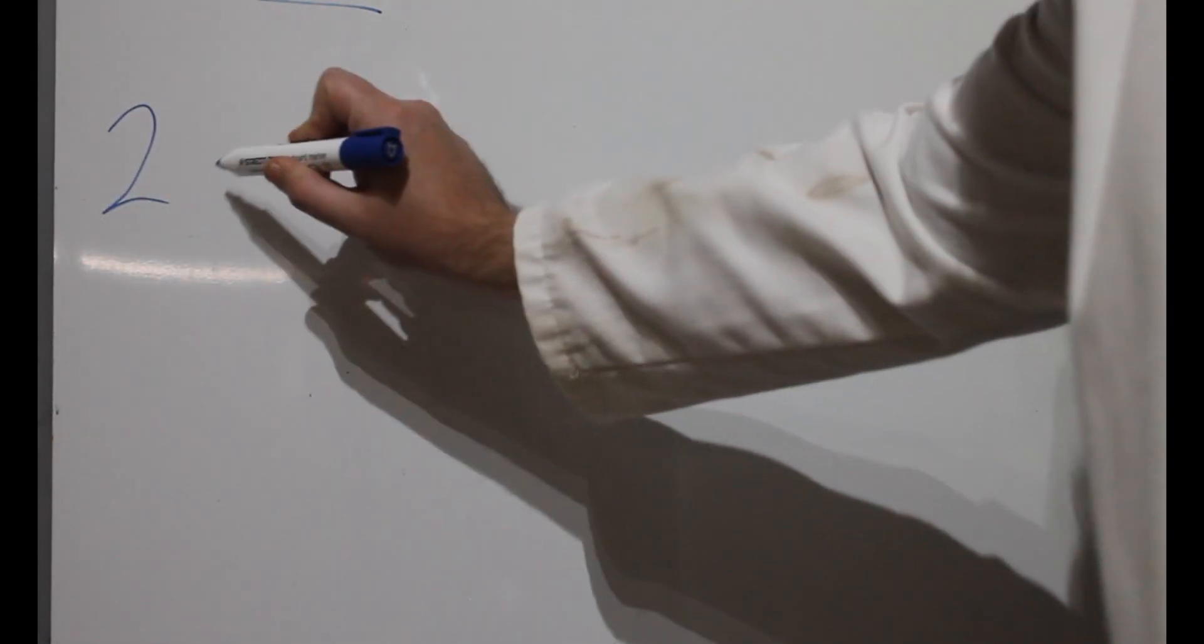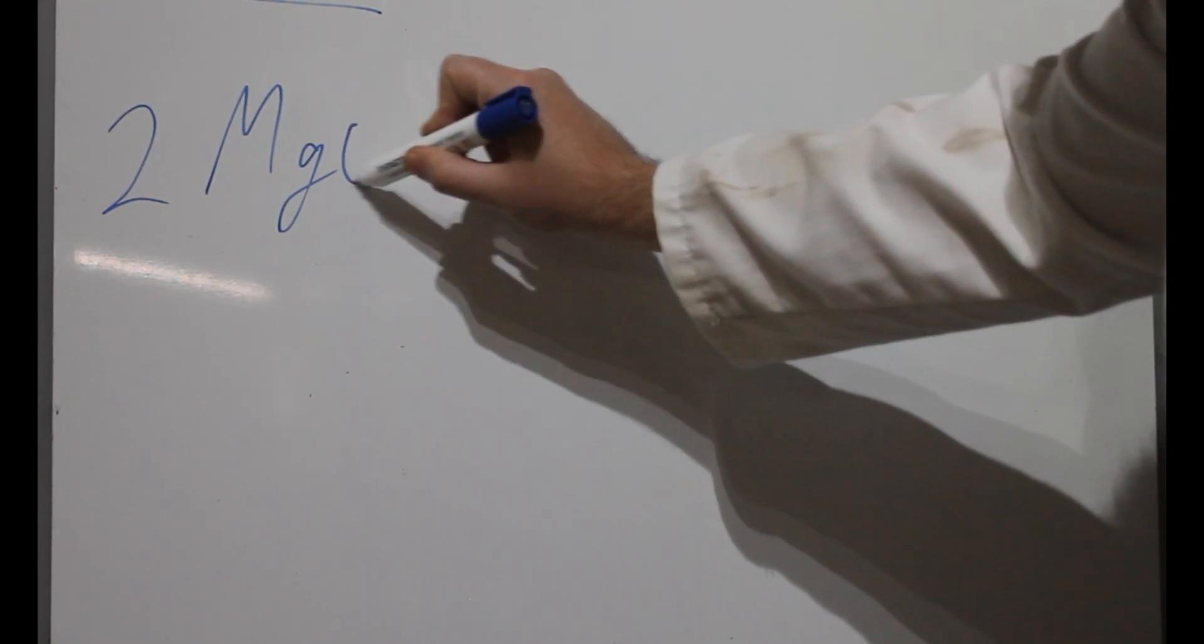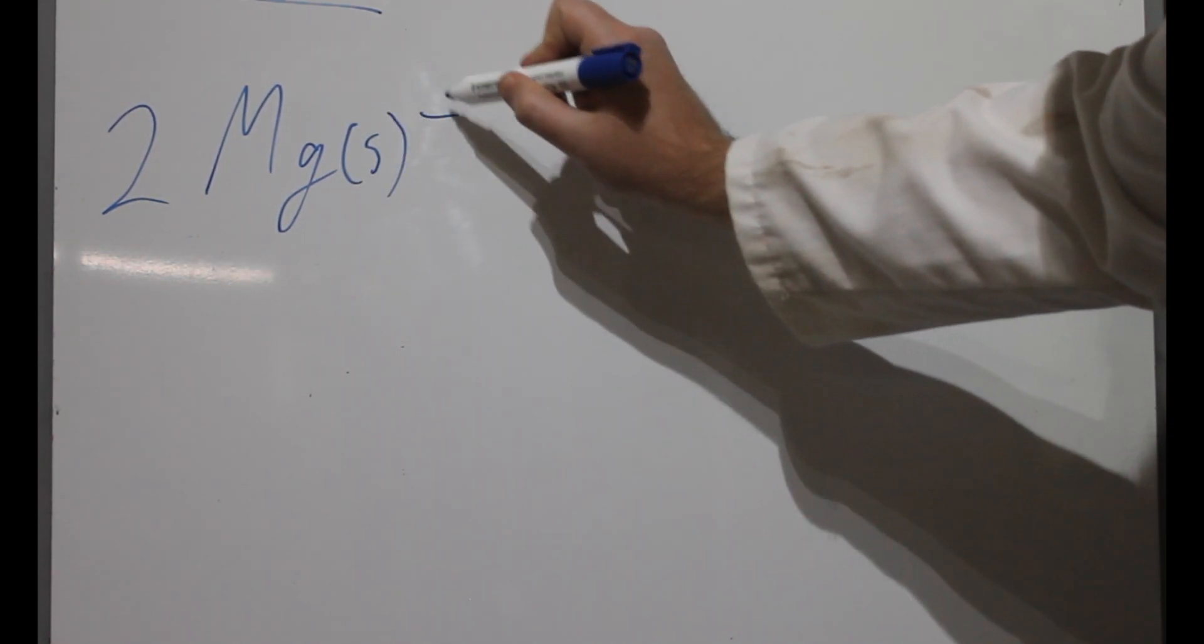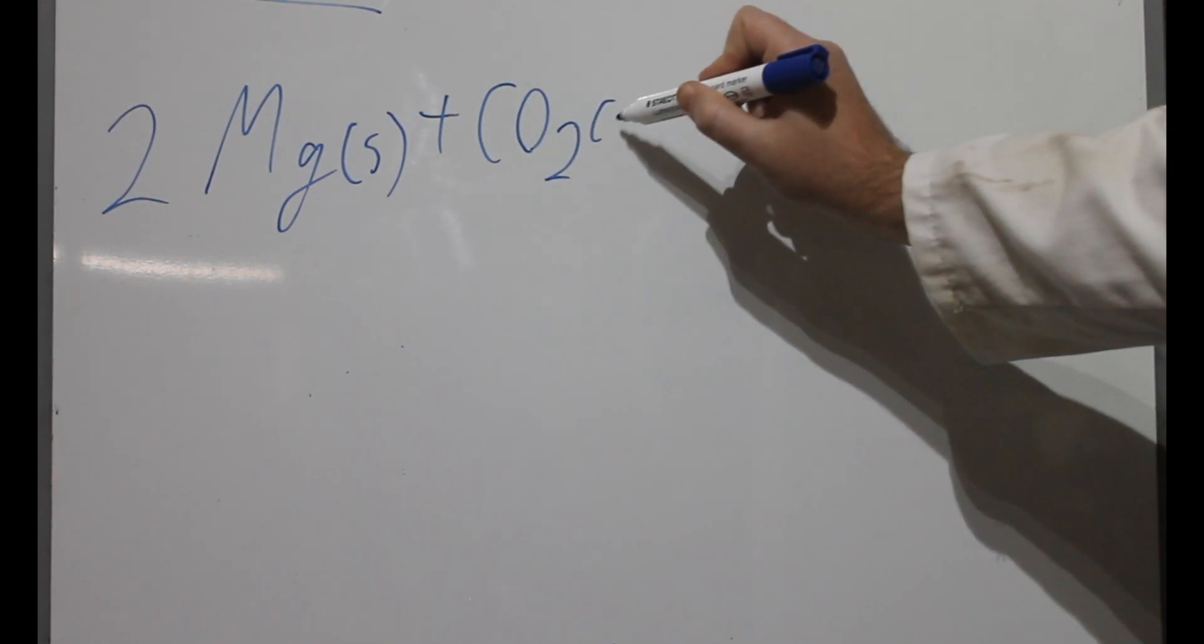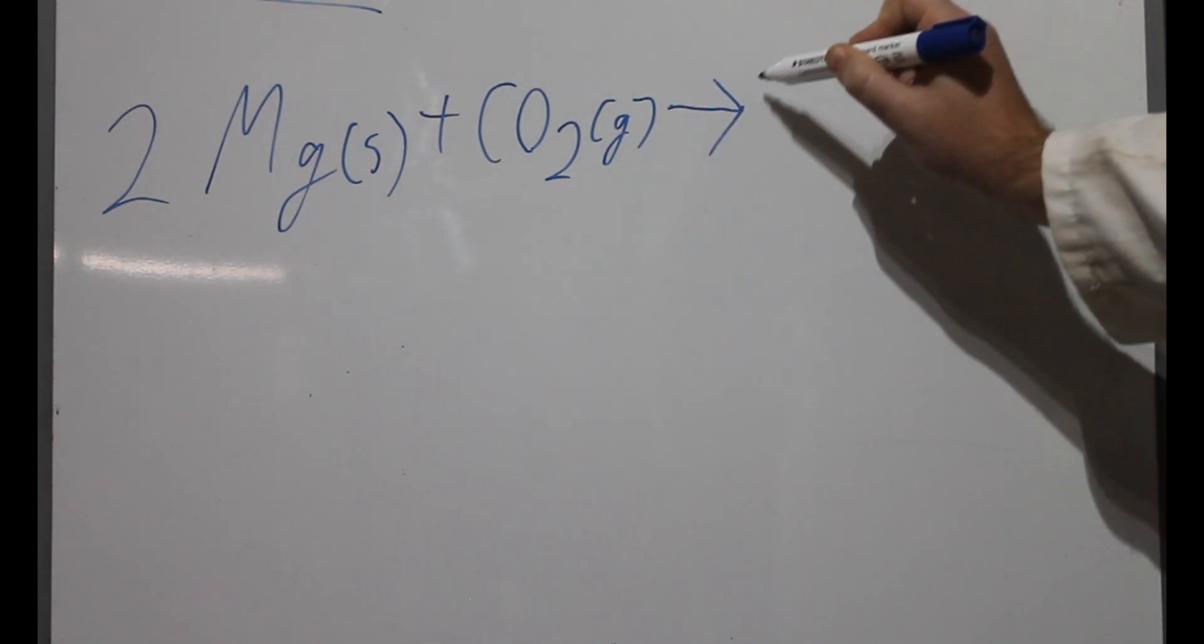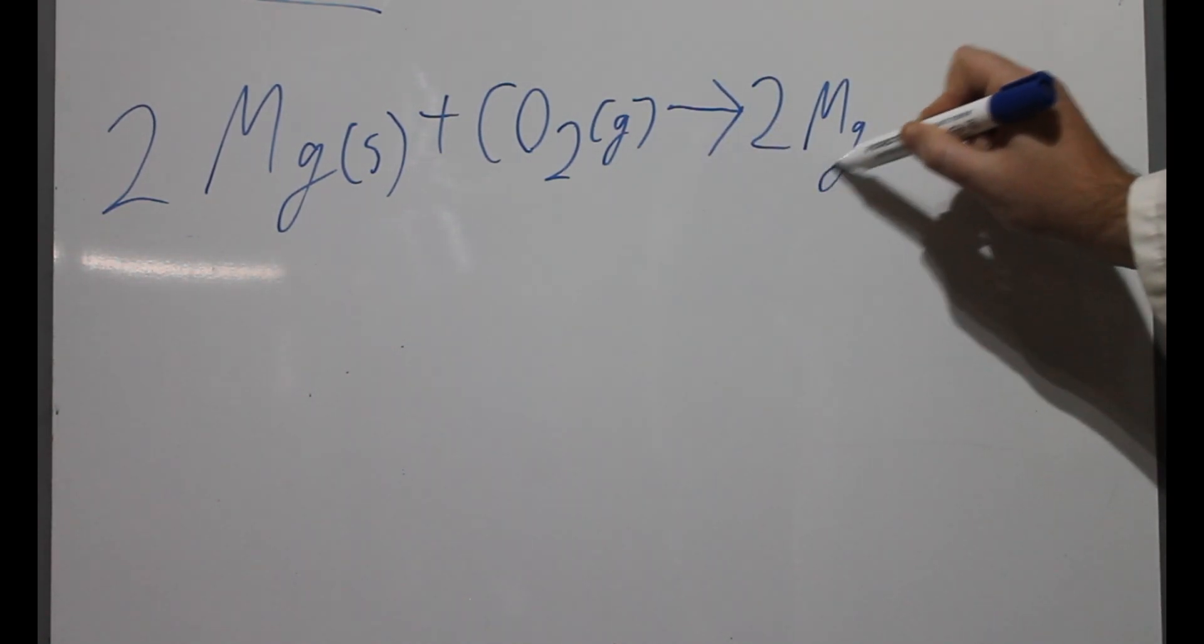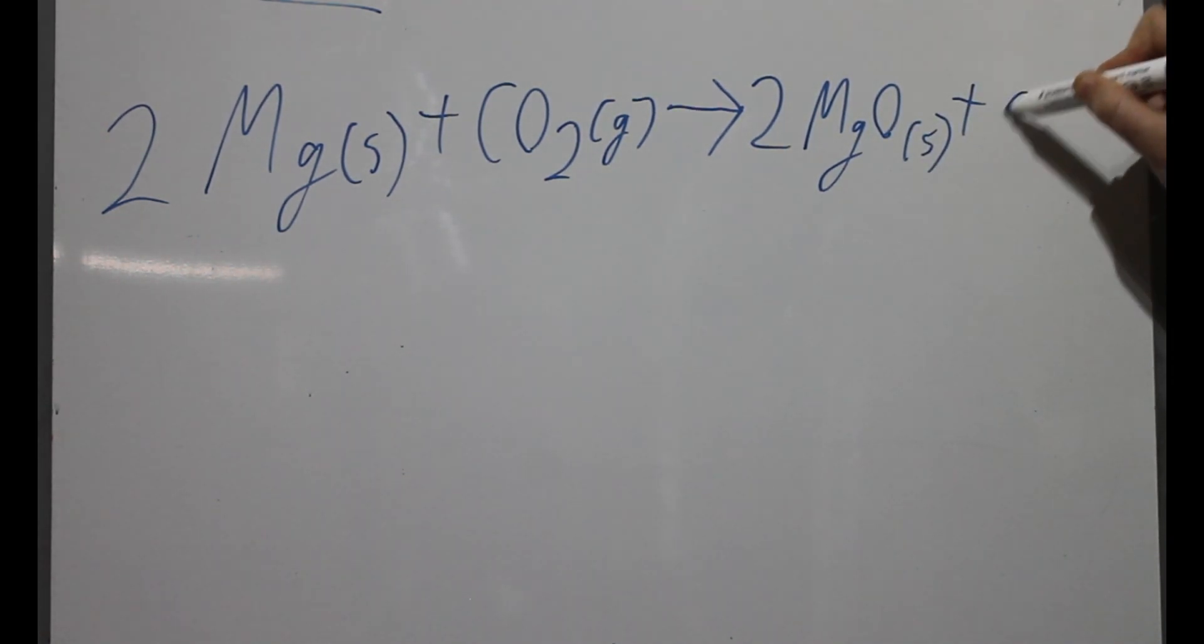Now, let's have a look at what is happening chemically. If we have solid magnesium metal and carbon dioxide gas, usually the flame would go out. But in this case, magnesium is such a powerful reducing agent that it's actually able to use the oxygen in the carbon dioxide itself.